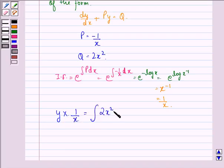that is 2x² times integrating factor, that is 1/x dx plus a constant C. This implies that y/x equals 2x, and 2x on integration gives x² + C.